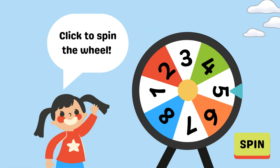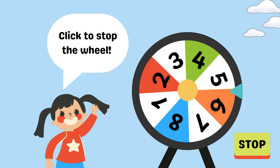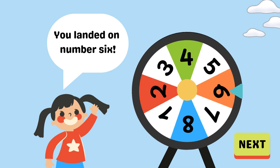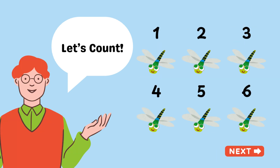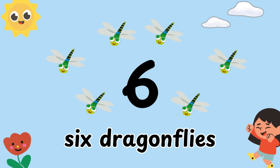Again next, click to spin the wheel. Then, click to stop the wheel. You landed on number 6! So, here let's count! Here, 6 dragonflies.